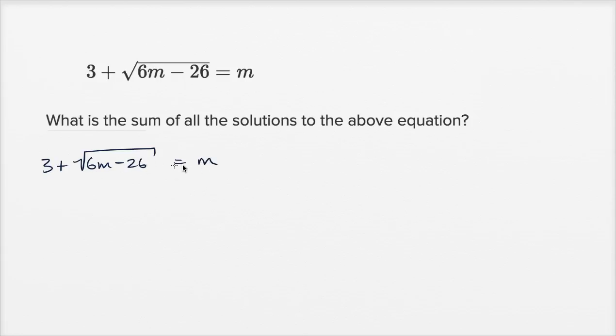So anytime you have a radical equation like this, it's a good idea to try to isolate the radical. Let's subtract three from both sides to just be left with the radical on the left hand side. On the left hand side, you're just left with the square root of 6m minus 26, and that's going to be equal to m minus three.